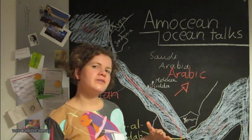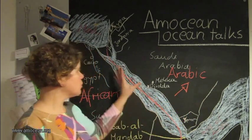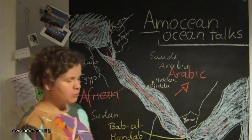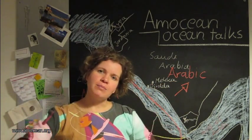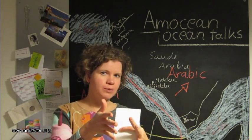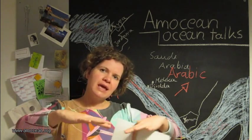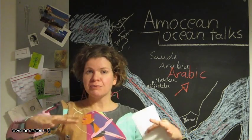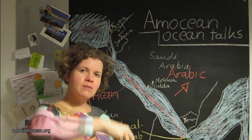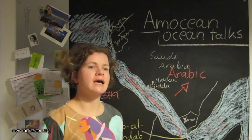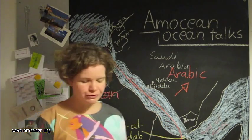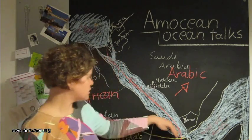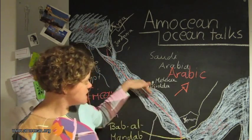Where the tectonic plates drift apart — where the Arabic plate moves away from the African plate — we have a gap. Along this gap, molten stone, magma, can rise up, and by that the area of the two plates is extended; the plates are growing there. We have a row of volcanoes because of increased volcanic activity along this rift line, so in the Red Sea there are volcanoes along this middle line.